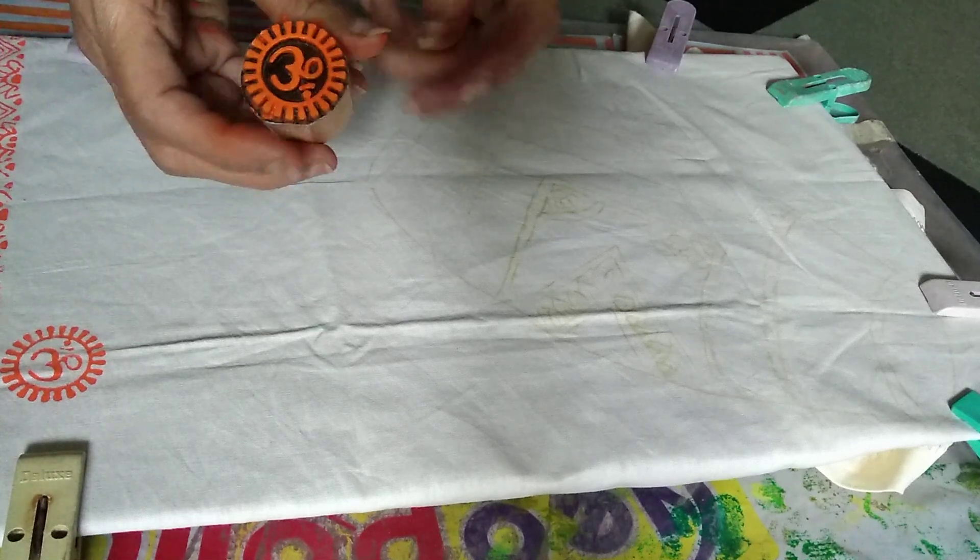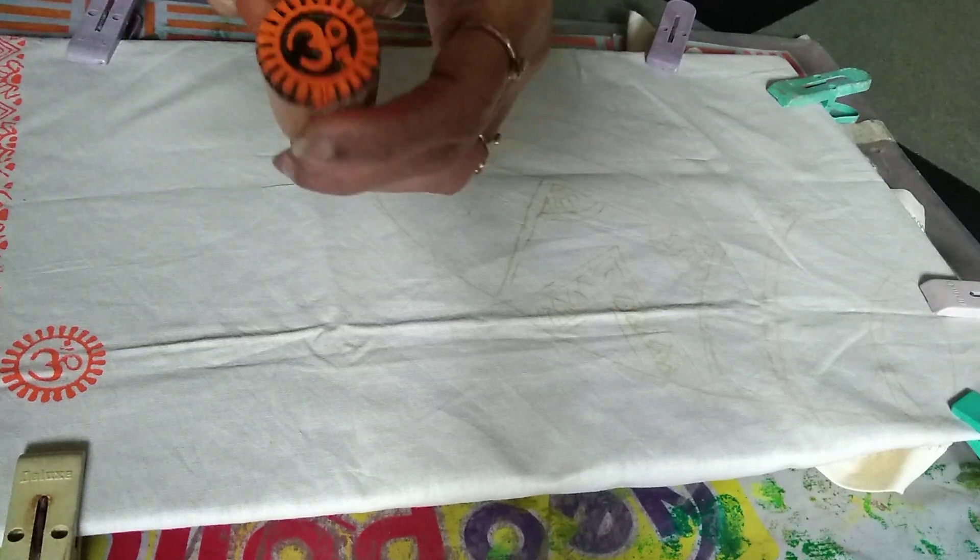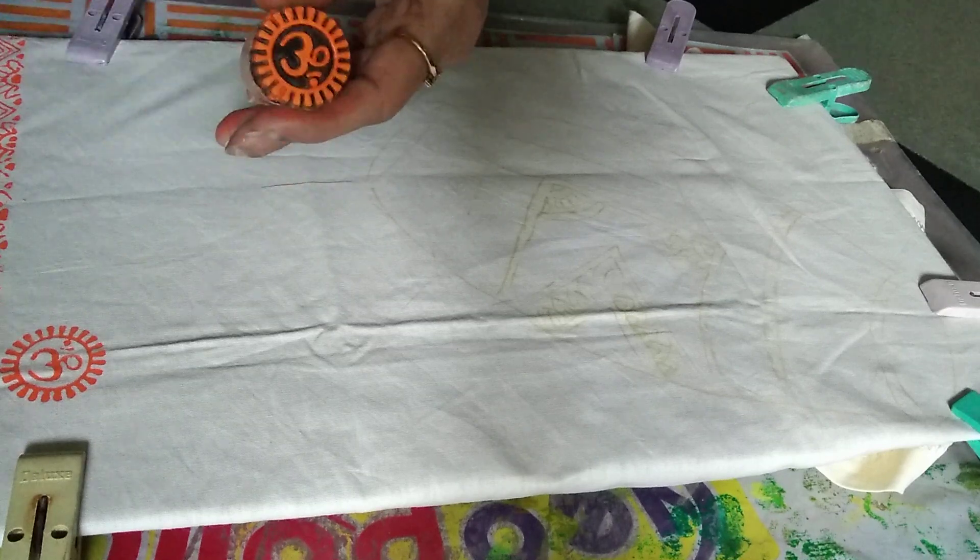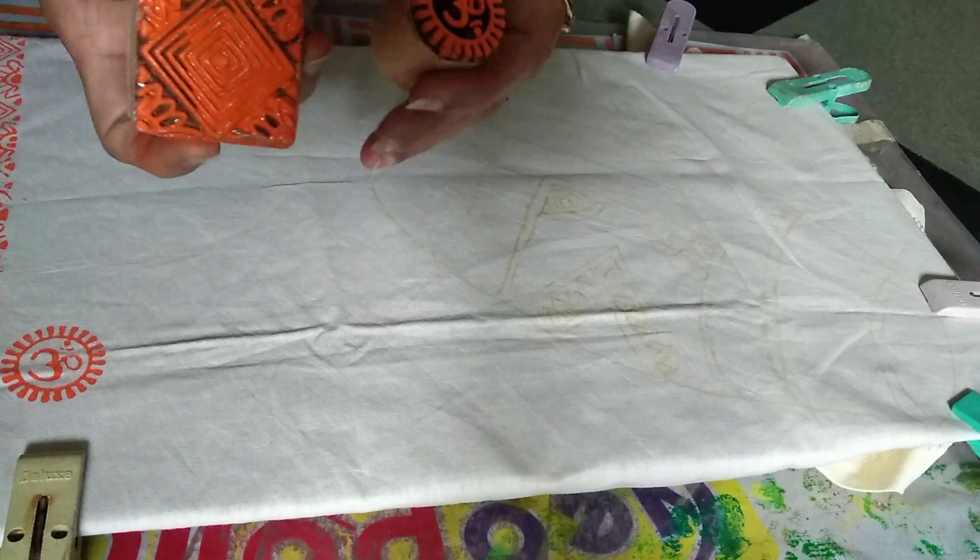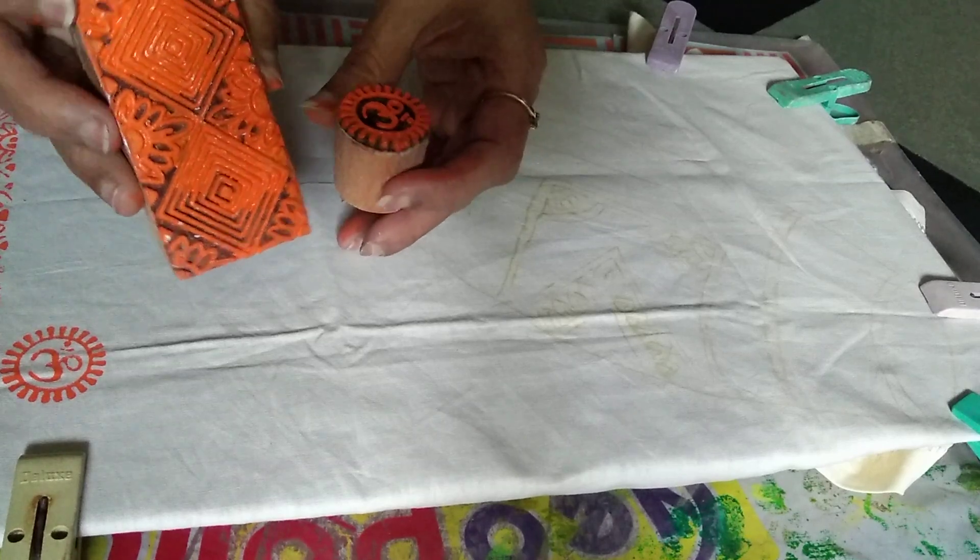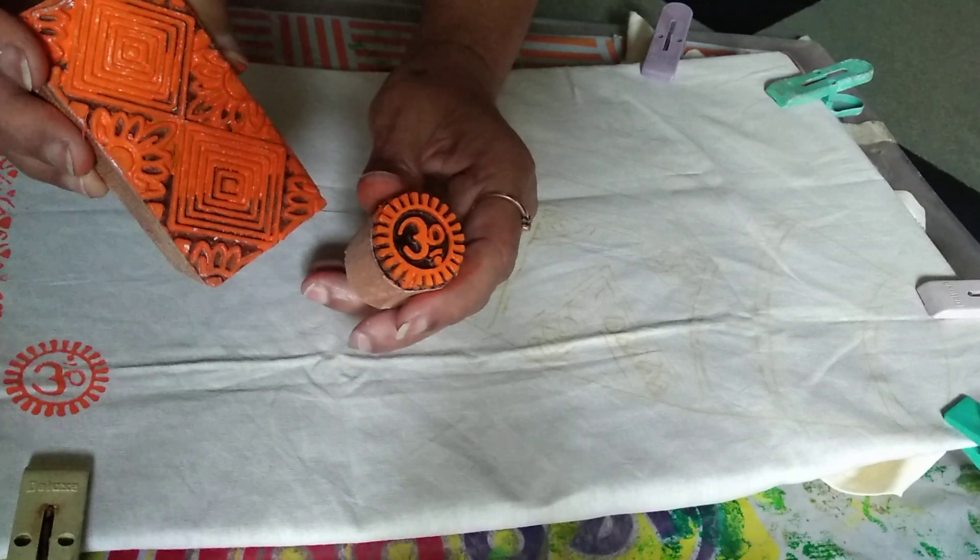I have come up with one more video on how you can paint fabric without a brush. This time we are doing it with blocks or stamps - these are wooden stamps you get in the market.